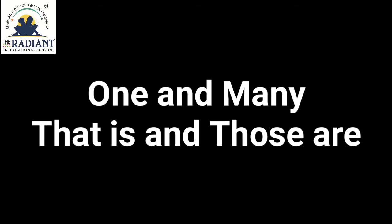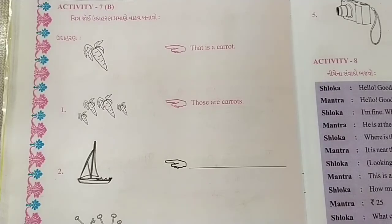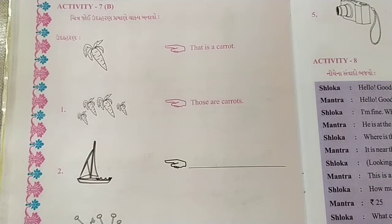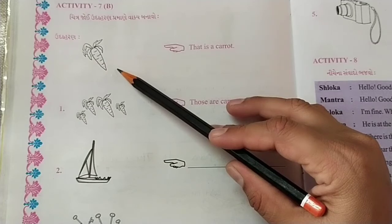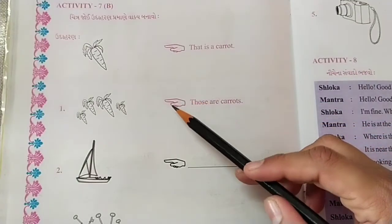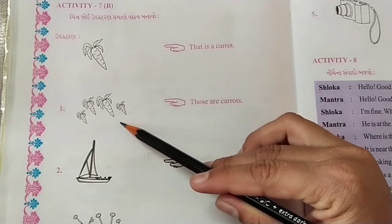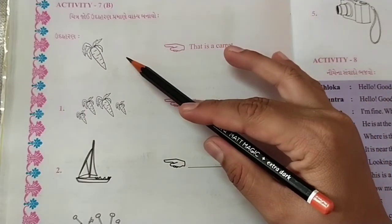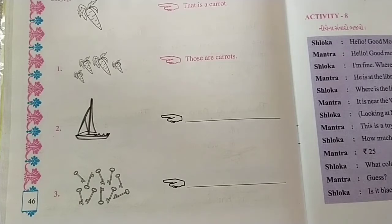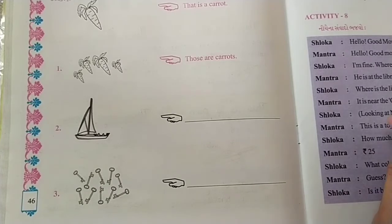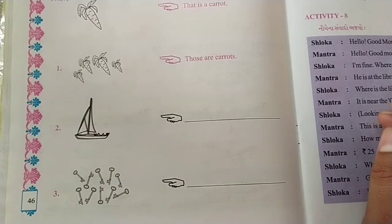One and many: 'That is' and 'Those are'. Activity 7B. Make sentences as per the example by looking at the pictures. That is a carrot, and those are carrots. Write the remaining sentences as per the example.